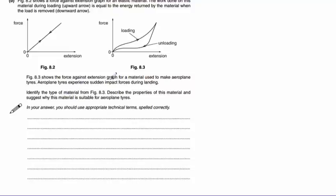So we need to identify the type of material that's used from figure 8.3 and then describe the properties of the material and suggest why it's suitable for aeroplane tyres. This graph is a very common graph that we need to know, and it is a polymer. Something like rubber, for example.